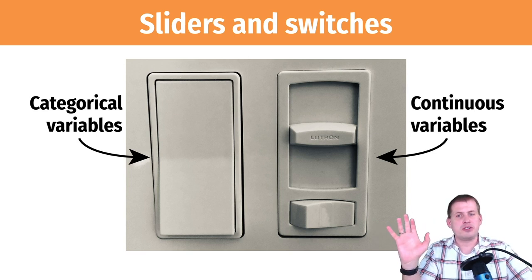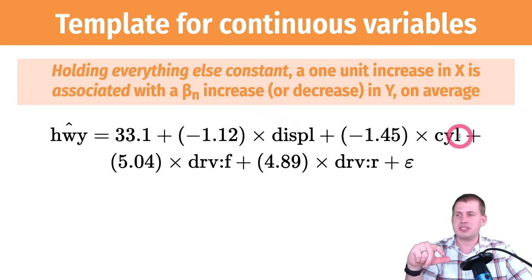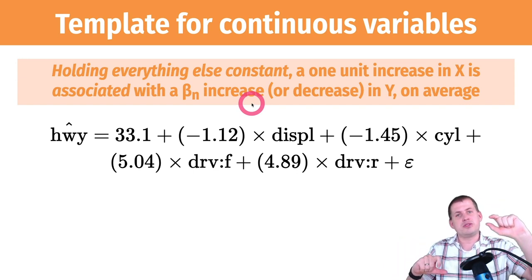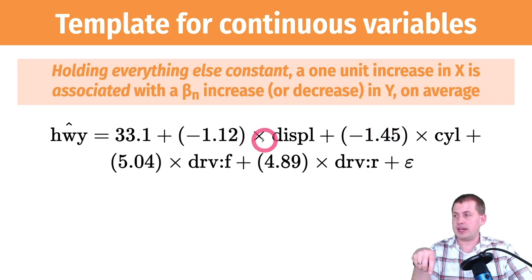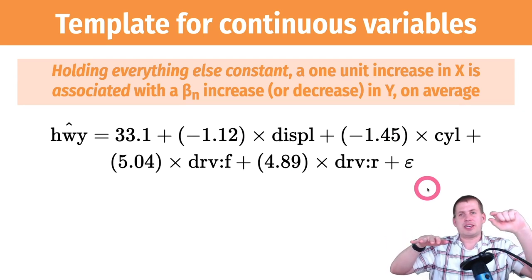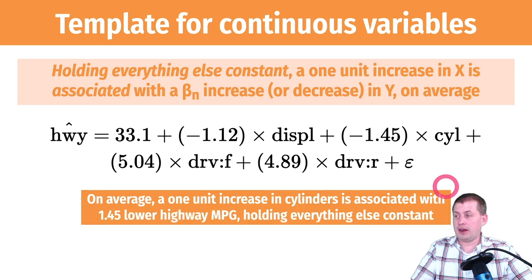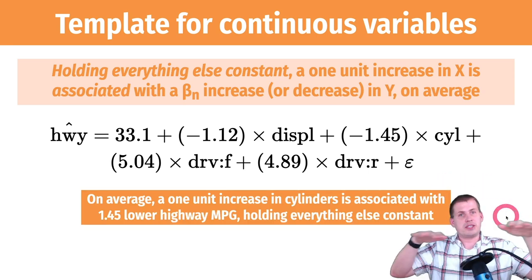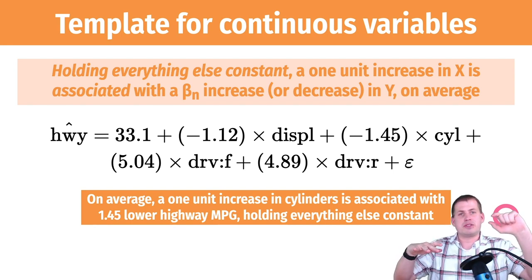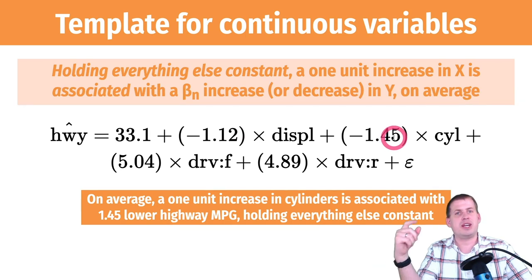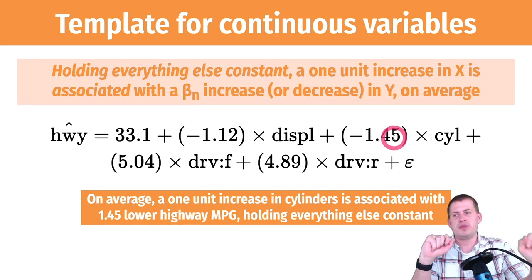So if you have a continuous variable like displacement or cylinders, it's a slider. You say: holding everything else constant — not touching any other switches — you're only moving that one slider. As you move the displacement slider up, miles per gallon goes down by −1.12. For cylinders: on average, as you increase cylinders by one and leave everything else the same — moving from 4 to 5 cylinders — you get −1.45 fewer miles per gallon.